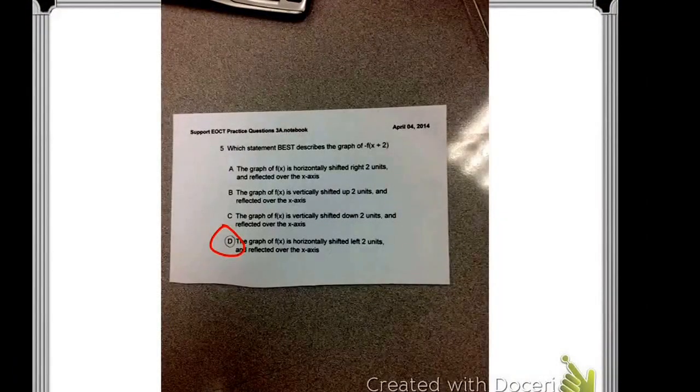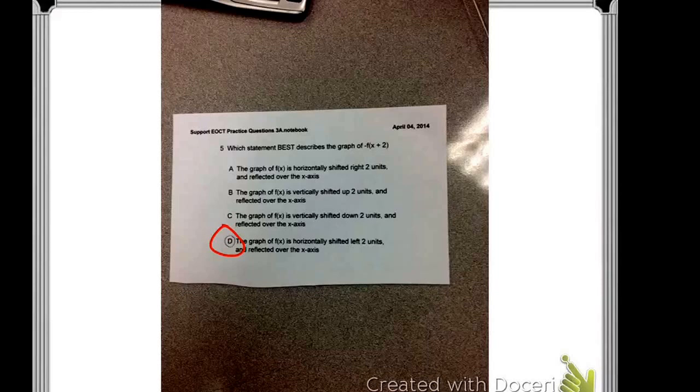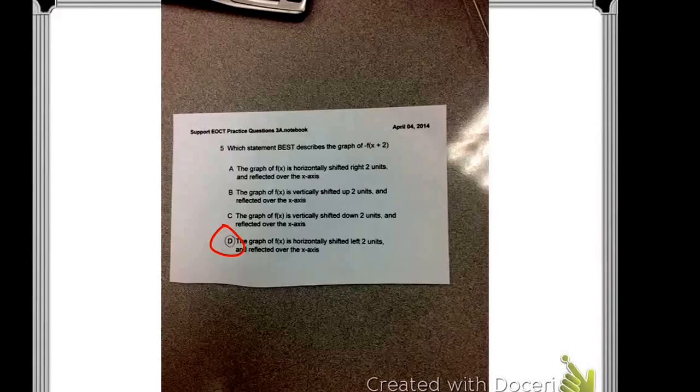Our problem is which statement best describes the graph of negative f(x + 2). So we got D because the graph is horizontally shifted left two units and reflected over the x-axis. The best thing to do is learn which spot is what. At first we thought it was a vertical shift but it was horizontal.